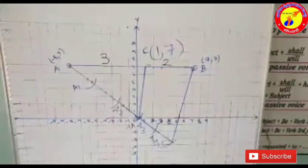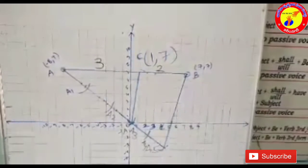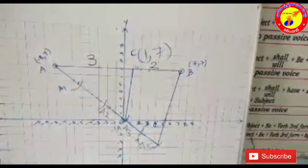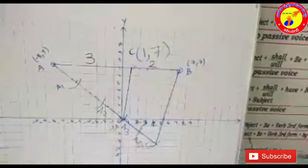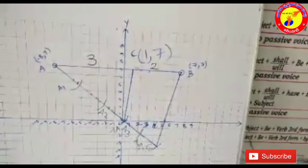From this diagram, we observe that AC is to CB equal to 3:2, and the coordinates of C are (1, 7).